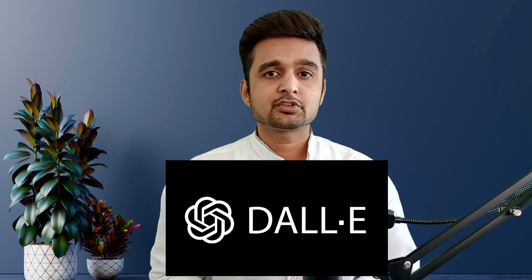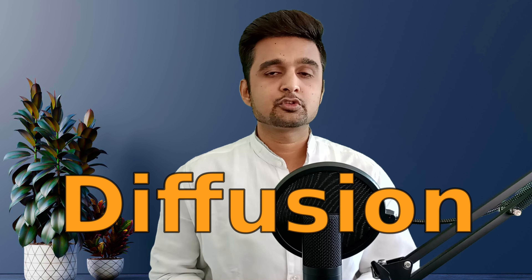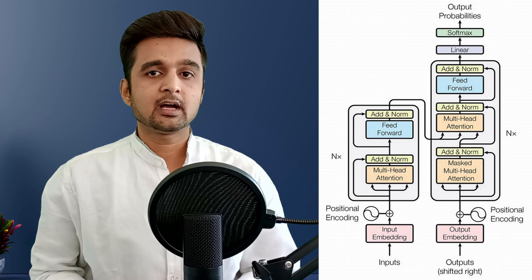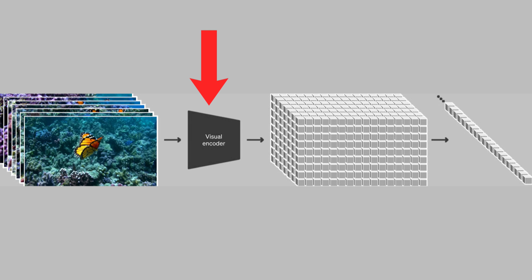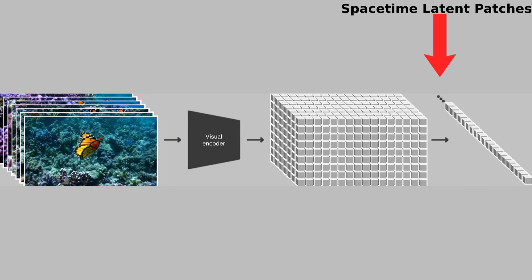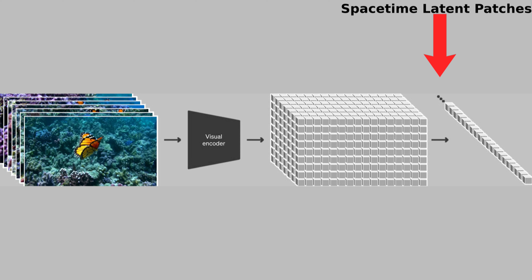Just like the image generation model DALL-E, Sora is a diffusion model that starts with static noise and iteratively generates video by removing a little noise each time. The individual networks used in Sora are based on the famous transformer architecture. During the training stage, a video compression network first compresses the dimensionality of the visual data — taking raw video as input and outputting a latent representation that is compressed both temporally and spatially. These latent frames are referred to as space-time latent patches.